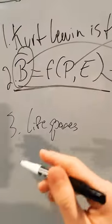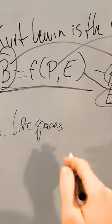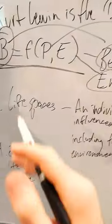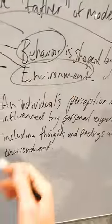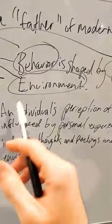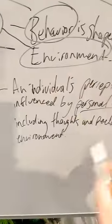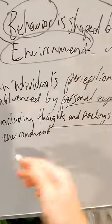His theory involves things called life spaces. So a life space is basically an individual's perception of reality influenced by personal experience, including thoughts and feelings and the environment.